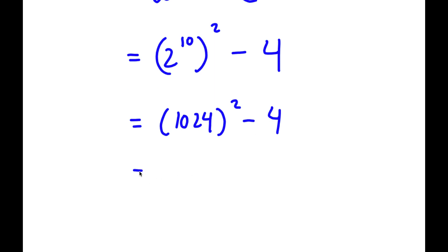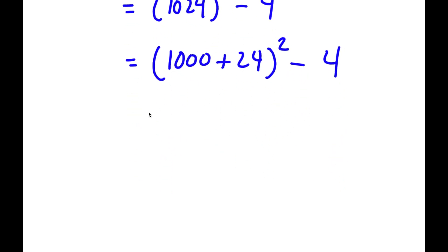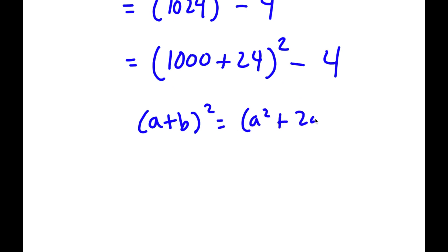I can rewrite 1,024 as 1,000 plus 24. So now I have 1,000 plus 24 squared, minus 4. Now if I have something in the form a plus b squared, this is equal to a squared plus 2ab plus b squared.